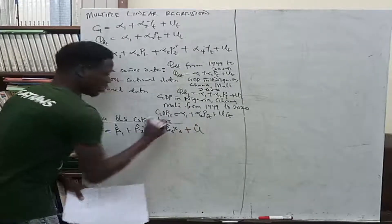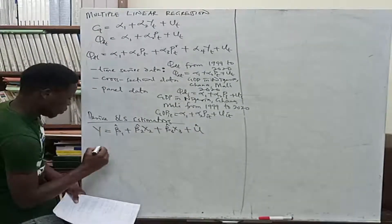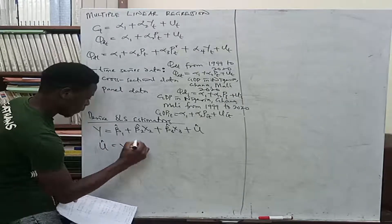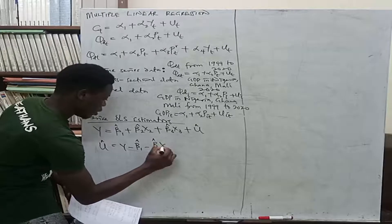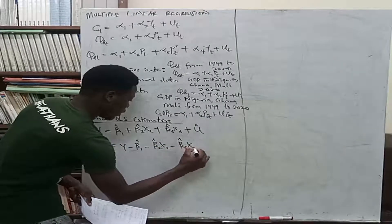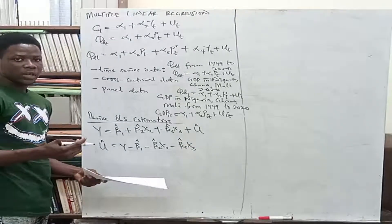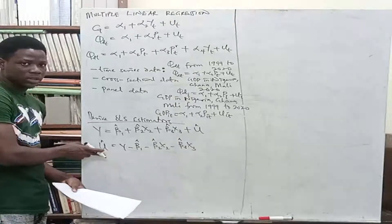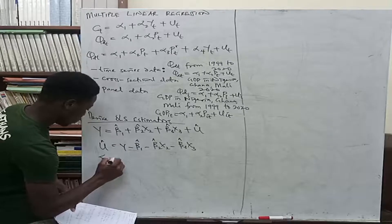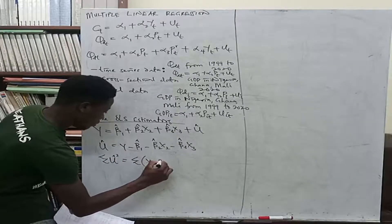The first step is to make the error term u the subject of the equation. Then we take the sum of the error term on both sides and square them, giving us: Σu² = Σ(Y − β̂1 − β̂2·X2 − β̂3·X3)².